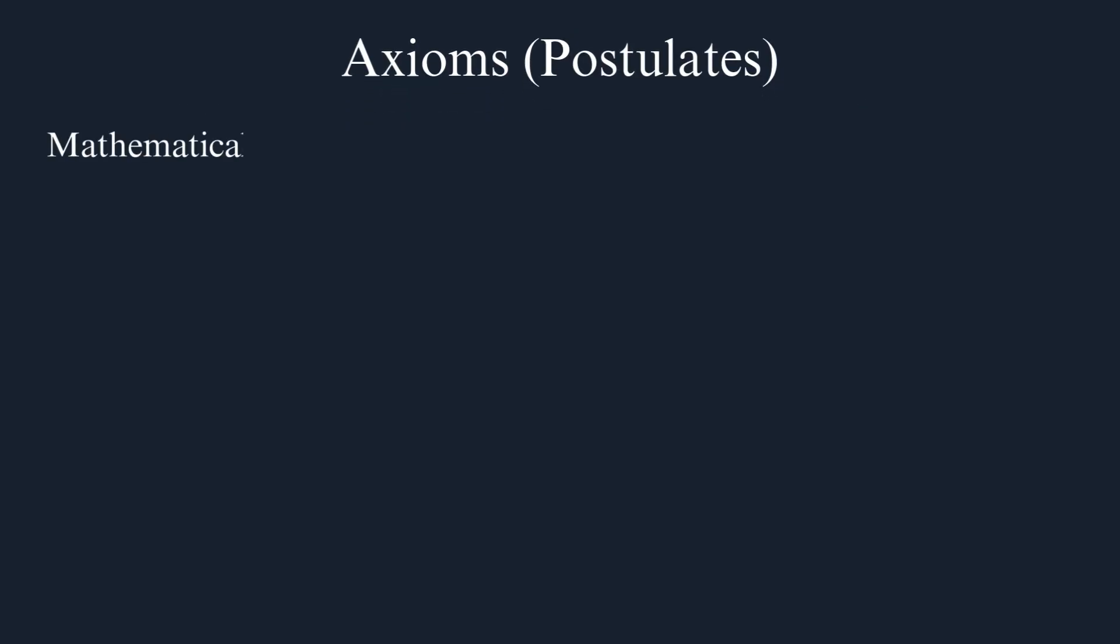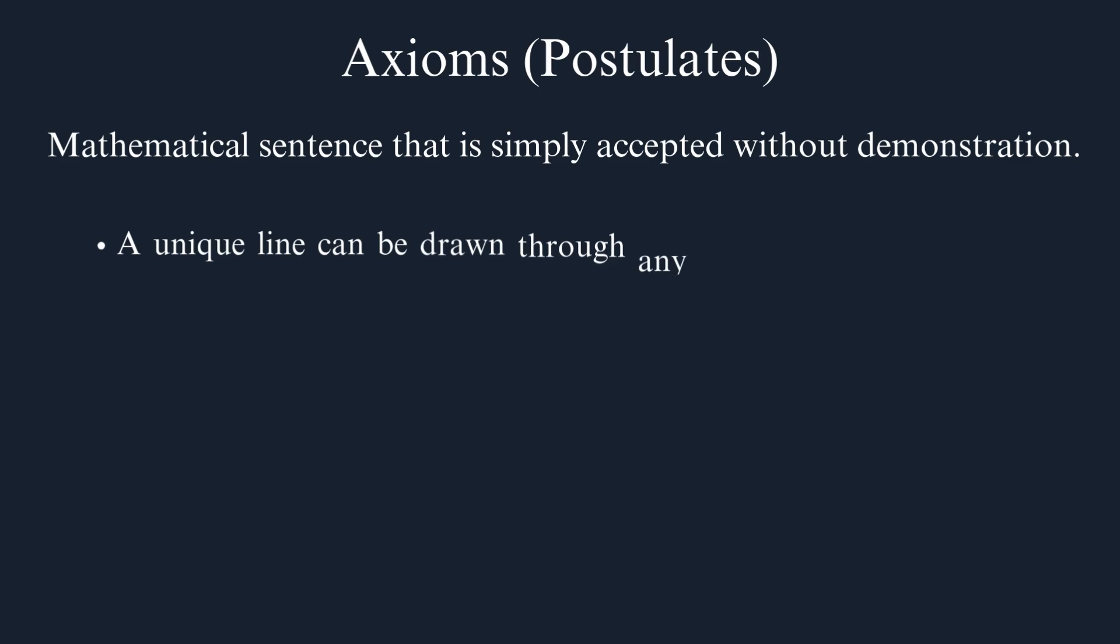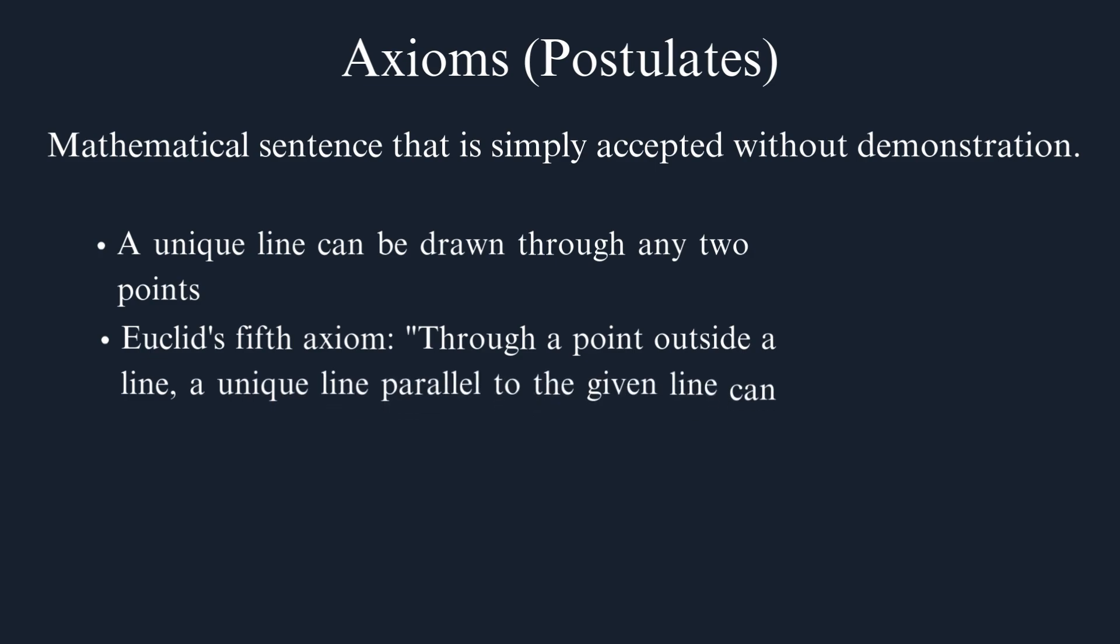Axioms. An axiom or postulate is a mathematical sentence that is simply accepted without demonstration. It's something so obvious that we simply accept it, and it's not necessary to prove such a statement. Let's see some examples of postulates or axioms. A unique line can be drawn through any two points. Euclid's fifth axiom: Through a point outside a line, a unique line parallel to the given line can be drawn.